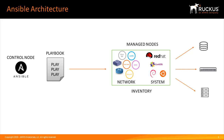Number two is the managed node. A managed node is a device that will be configured by an Ansible control node. Ansible supports many types of operating systems including network operating systems like Junos from Juniper and Cisco IOS from Cisco. And now we've reached a milestone by adding Ruckus ICX Fast Iron to be part of the Ansible family. It also supports Linux distribution systems such as Red Hat.